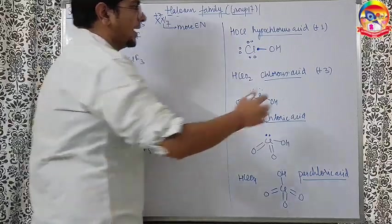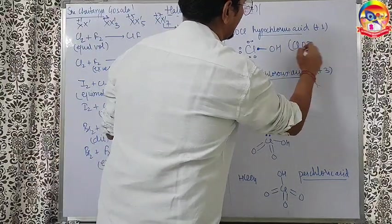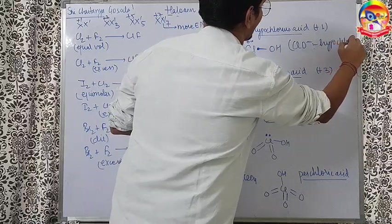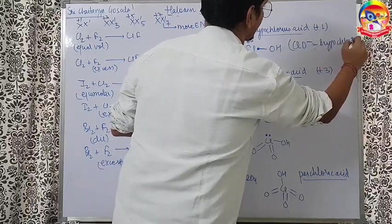Hypochlorous acid plus 1. The anion of hypochlorous acid is ClO-, known as hypochlorite, not ride, rite, T-E.